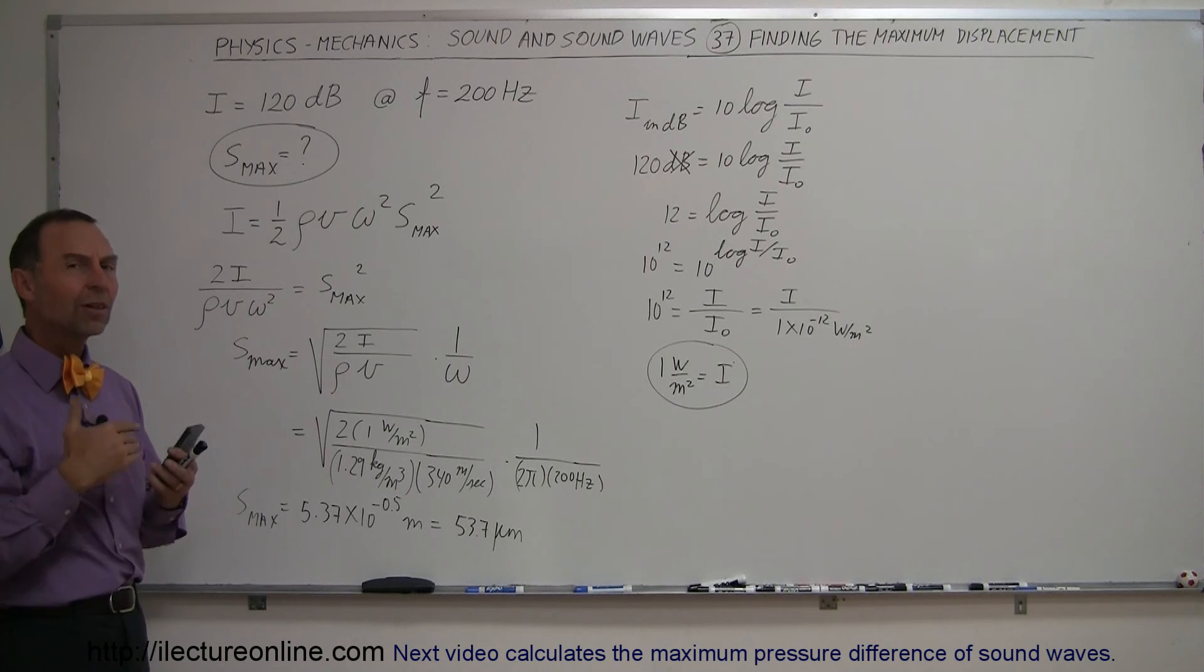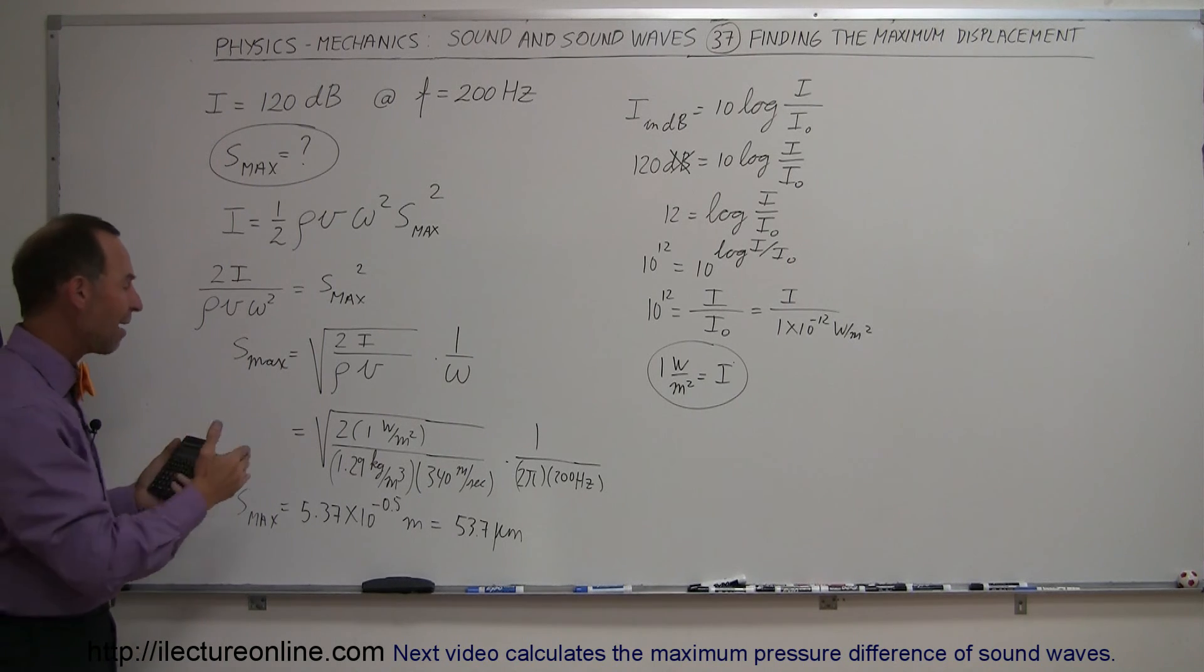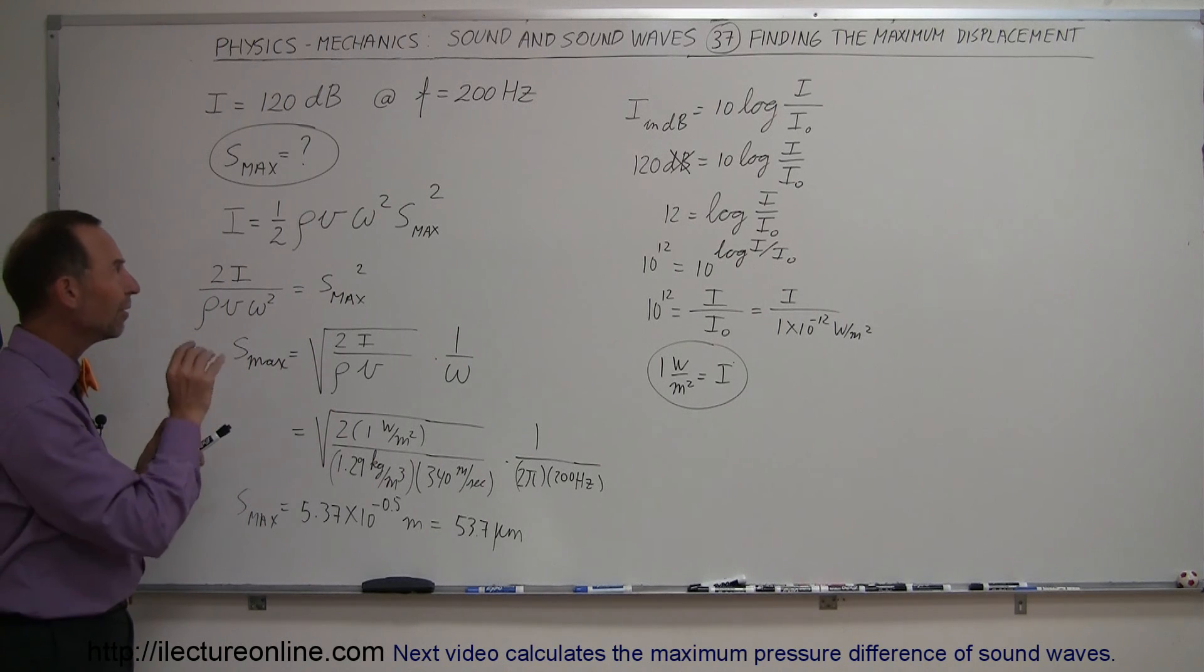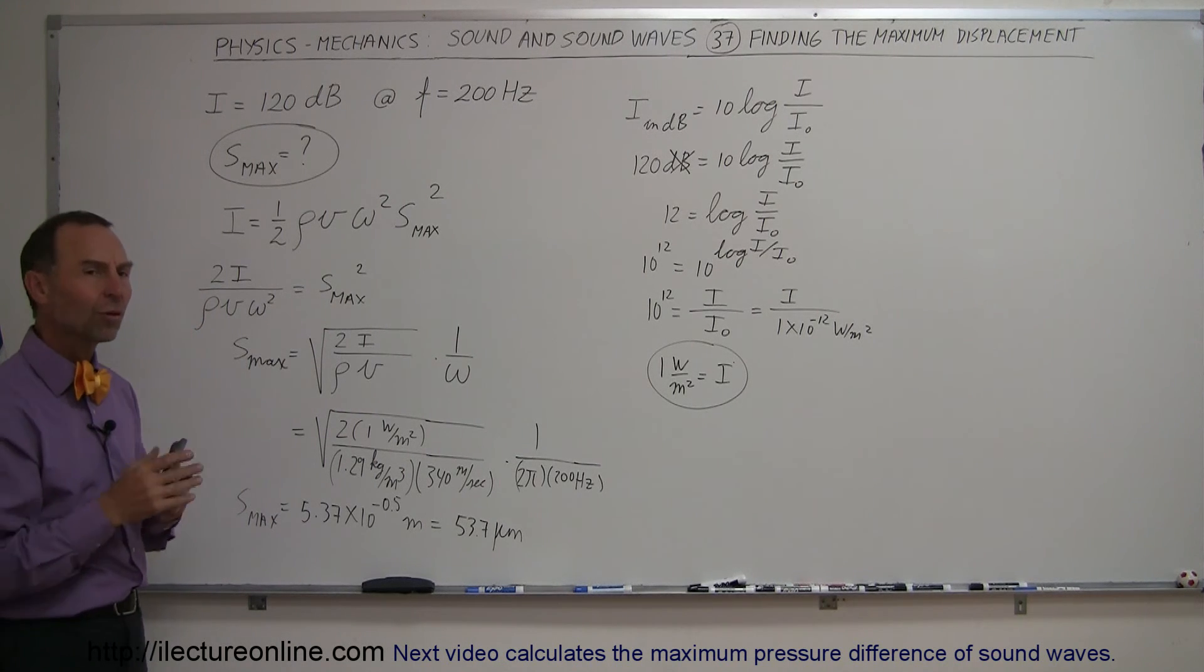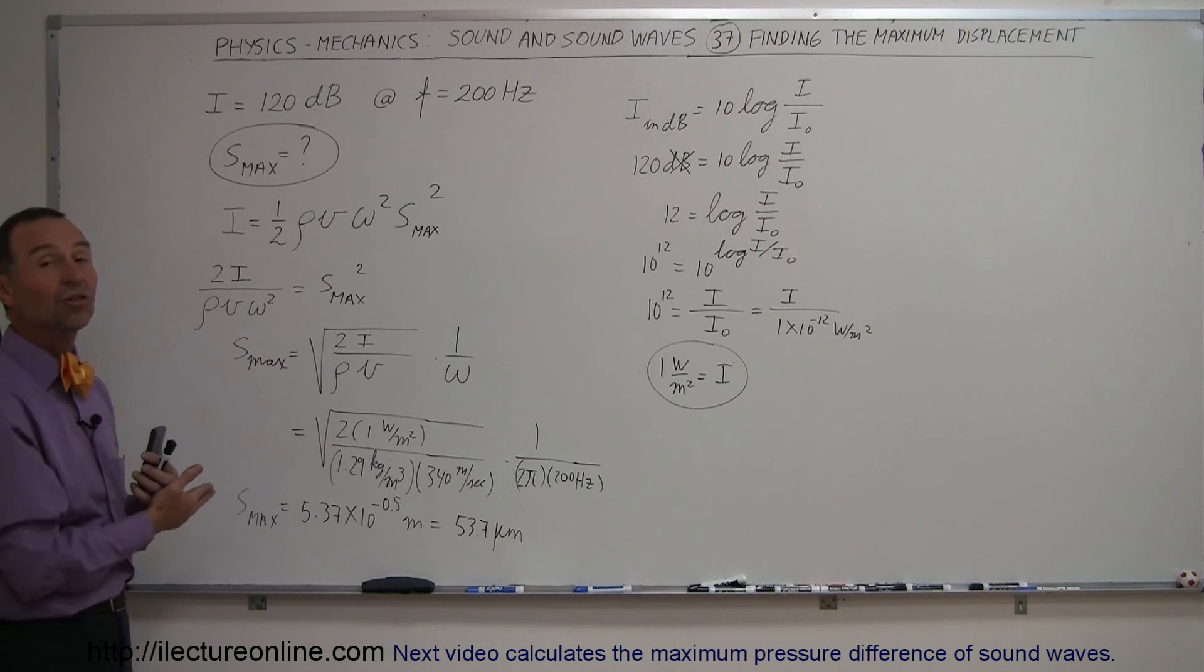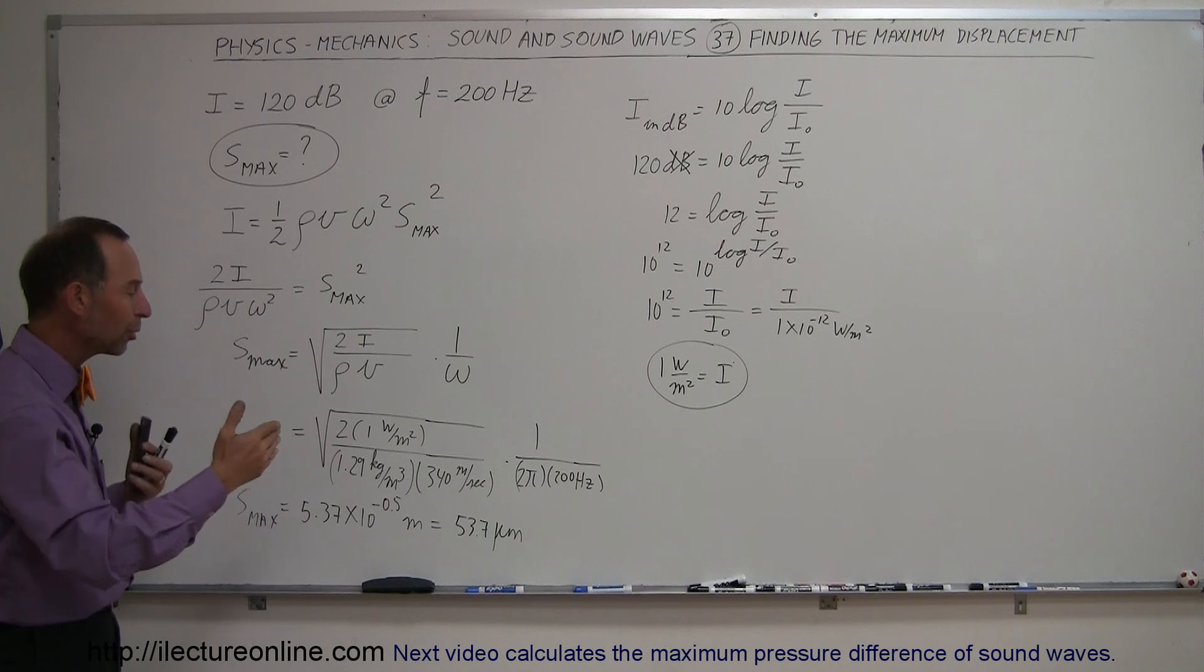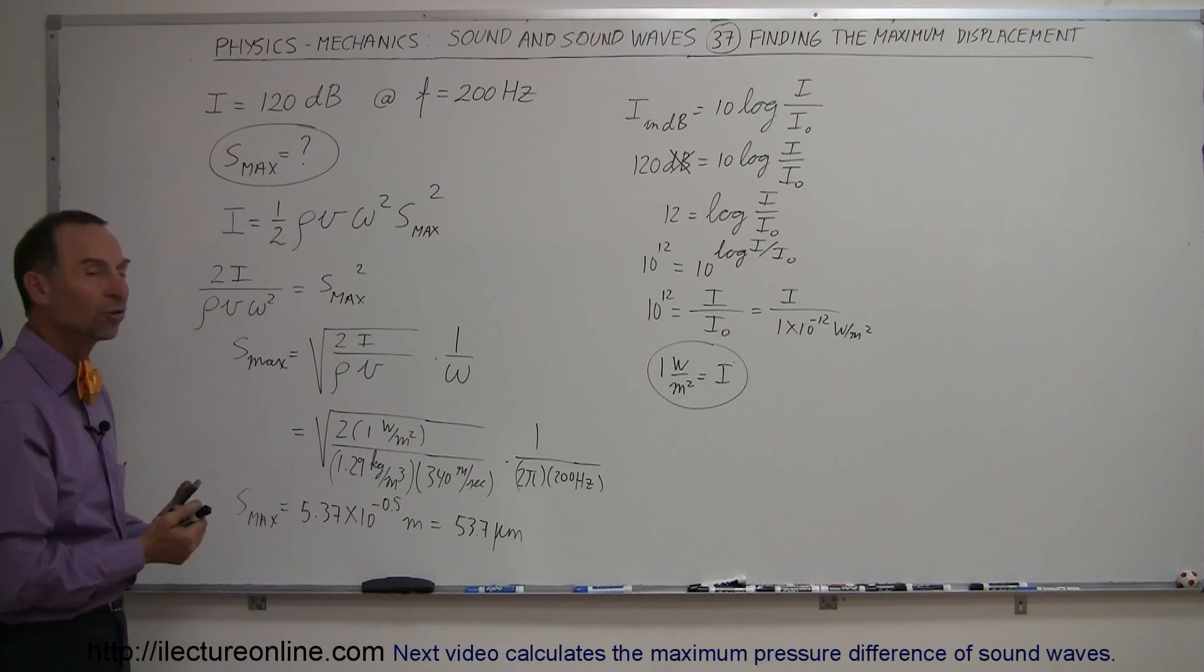So you can see that very loud intensity sounds have much greater displacements of the air molecules than very faint intensity sounds, sounds that are much quieter. That's where all the energy comes from, the much more violent vibration at much greater amplitudes to create these much louder sounds.